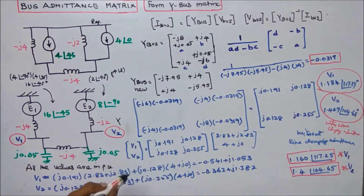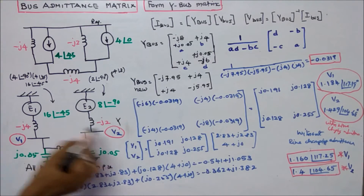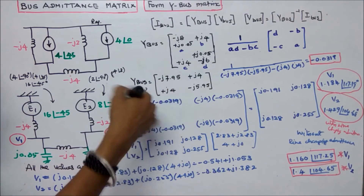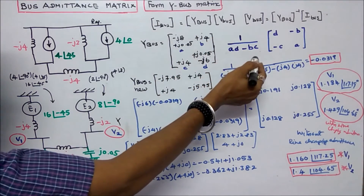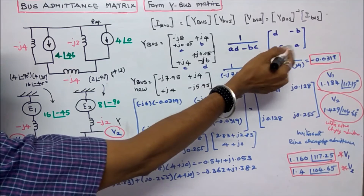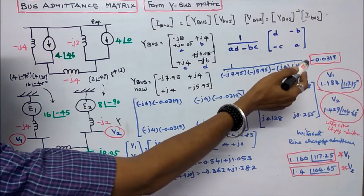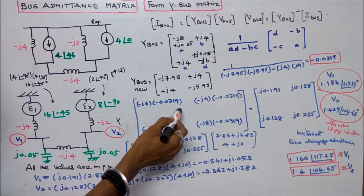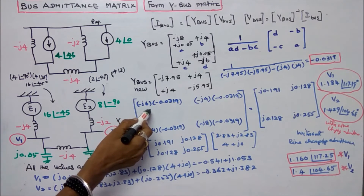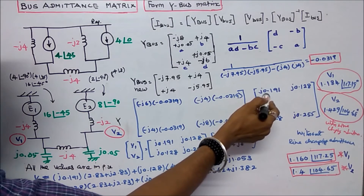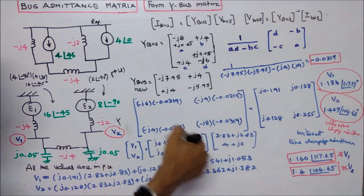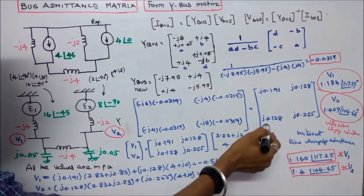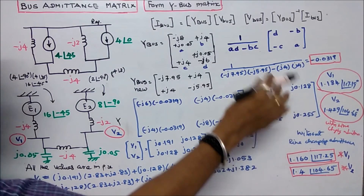This is the new Y-bus matrix. Next, we calculate V1 and V2 by finding the Y-bus inverse. Using 1 by AD minus BC: the result is minus 0.0319. Multiplying by D (minus J6) gives J0.191. Computing all values, the inverse matrix entries are J0.128, J0.128, and J0.255. This is the new Y-bus inverse.